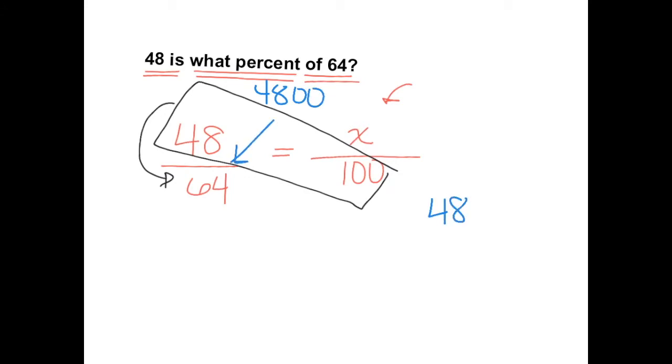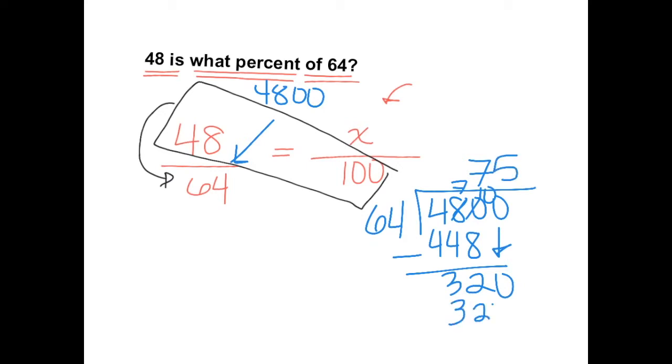4,800 divided by 64. 64 goes into 487 seven times, which equals 448. This becomes a 10, this becomes a 7. Bring down the zero. 64 goes into 320 five times. This equals 320. So our x is 75. So 48 is 75% of 64.